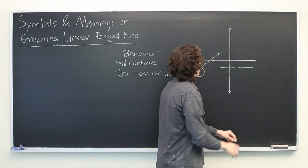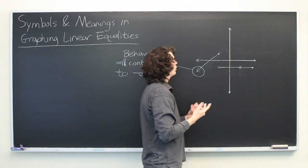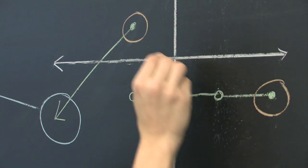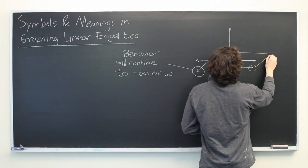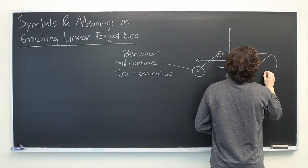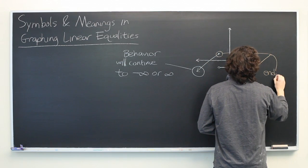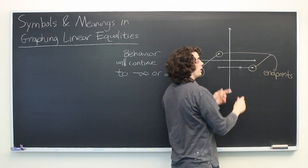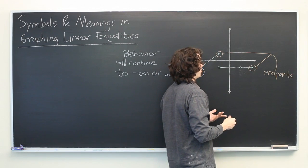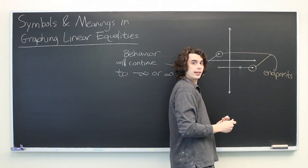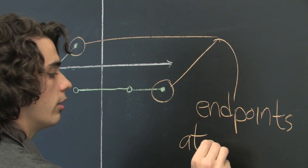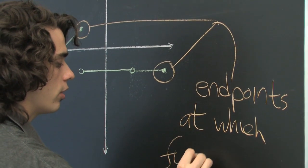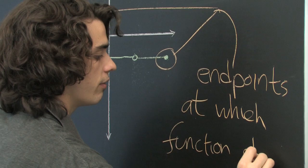So what about these filled in dots? Well, these are endpoints. They're closed endpoints. Endpoints of their respective lines. But since they are filled in, that notation is typically taken to mean that the function is defined at those endpoints. So endpoints at which function is defined.